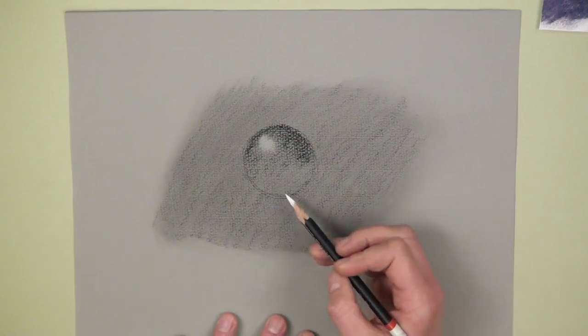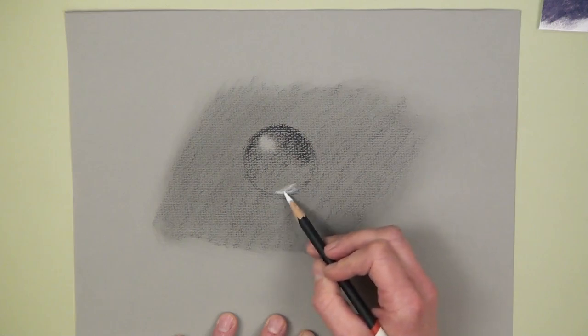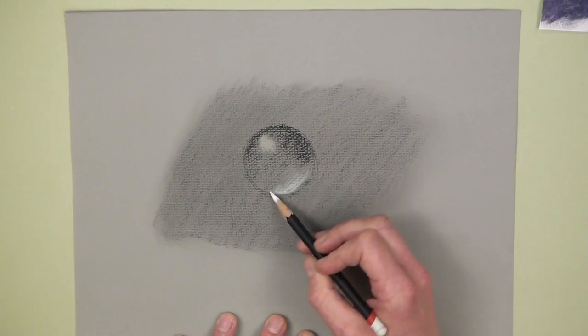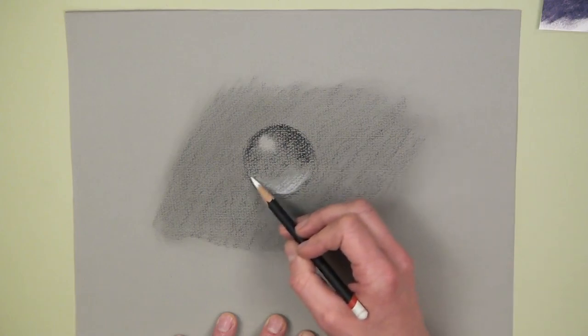And then with the white charcoal pencil, lightest area down the bottom here and then gradually lightening off towards the center so the two values meet using this background value in between.